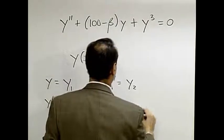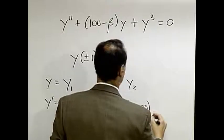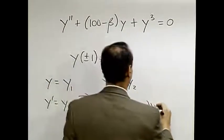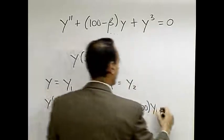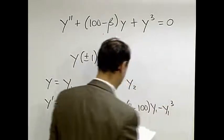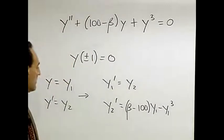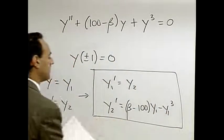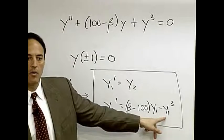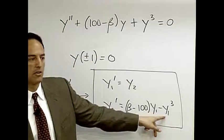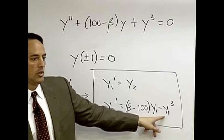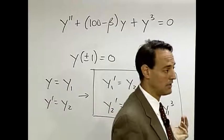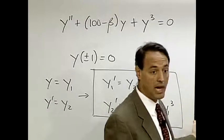From the second equation, y'' which is y₂' equals y''. Take this to the other side, you get β - 100 times y₁ - y₁³. So there's our problem in first order form. Don't underestimate how complicated this can make your life.